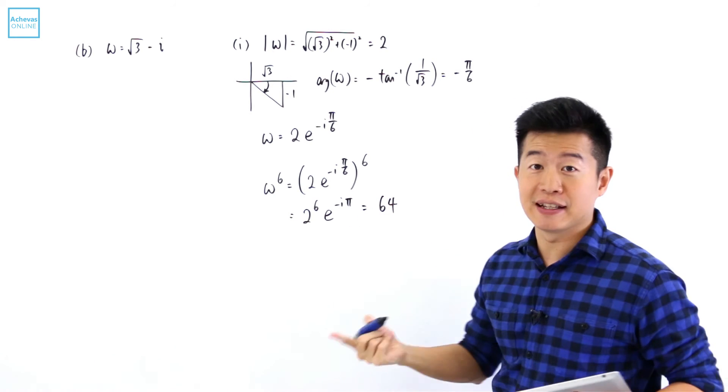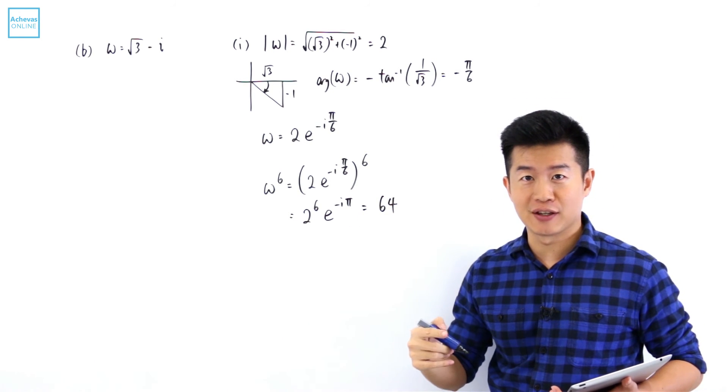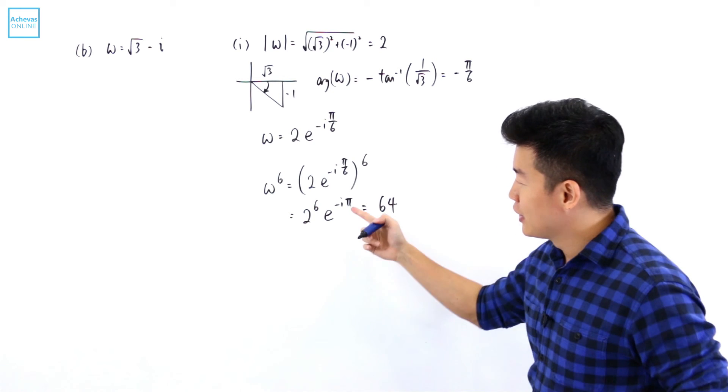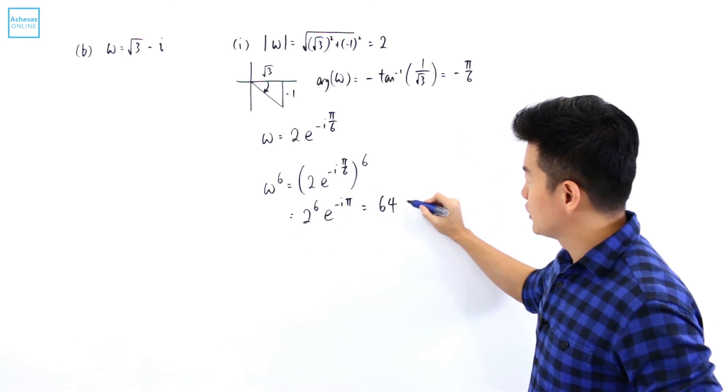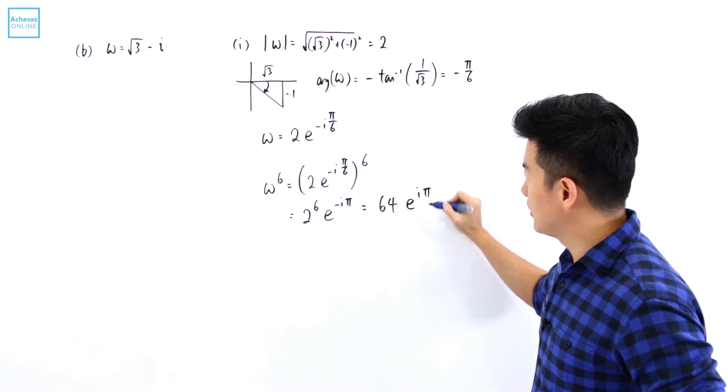And since the angle theta is given to me as to be between 0 to 2 pi, so minus pi is the same as pi. So this is e to the power of i pi.